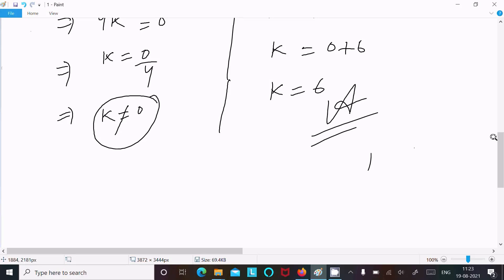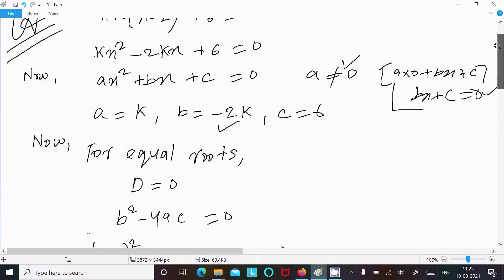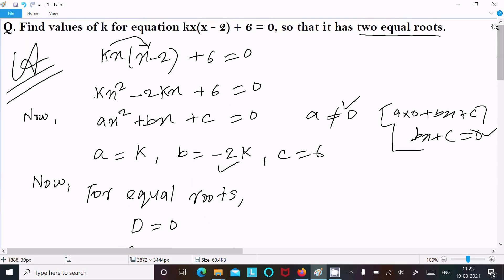Therefore, k cannot be 0, so we reject k = 0. Our answer is k = 6.